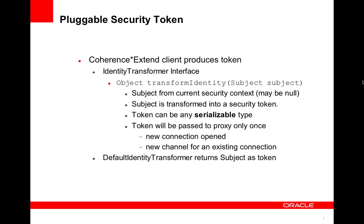What you return — that object from transform identity — has to be serializable, but it can be any serializable type. And if you want to use a type that Coherence does not know how to serialize, you would have to use a custom serializer to handle that. The token will only be passed to the proxy when a connection is opened or a new channel is opened for an existing connection. Coherence multiplexes channels over existing connections, which is a TCP/IP connection. There is a default identity transformer — there's always an identity transformer — and you can substitute your own for the default one.